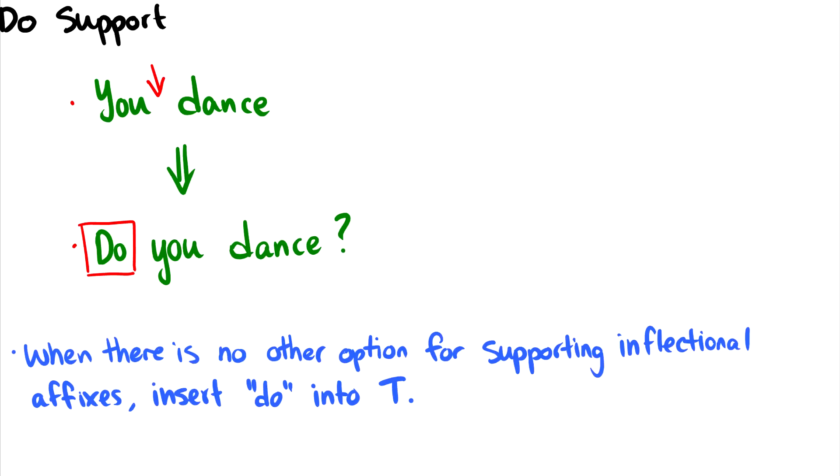When there's no other option for supporting inflectional affixes, we insert do into T in order to move it up to C. And this is frequently referred to as dummy do.